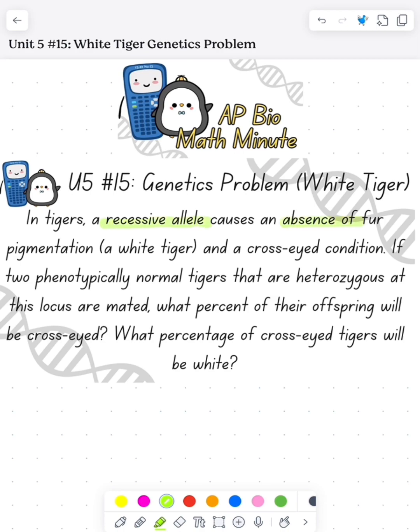We have a recessive allele that causes absence of pigmentation — aka the white tiger — and a cross-eyed condition. If we have two parents that are heterozygous, so capital A, little a, what percent of their offspring are going to be cross-eyed?